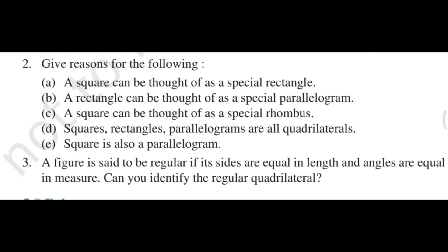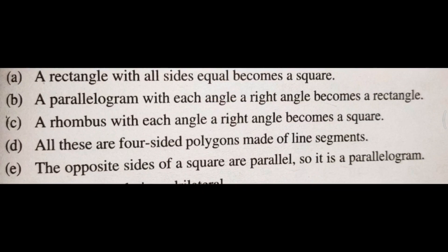Now question number two: give reasons for the following. We will read each part and give a reason. Part A: a square can be thought of as a special rectangle. Why? The reason is: a rectangle with all sides equal becomes a square. If all sides of a rectangle are made equal, it becomes a square.